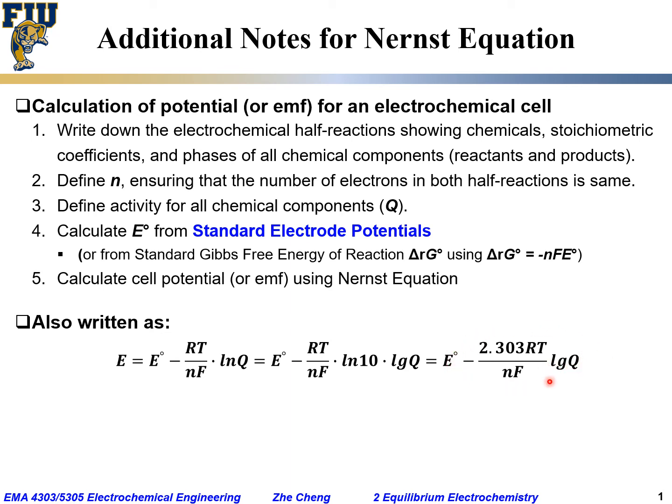And if the temperature is at 25 degrees C or 298.15 K, the equilibrium cell potential would be E° minus, if you plug the number for R, 8.312 joules per mole per K